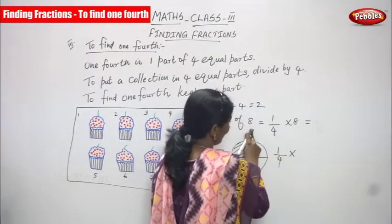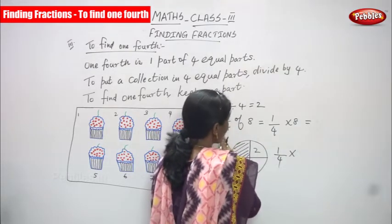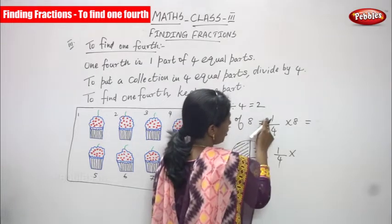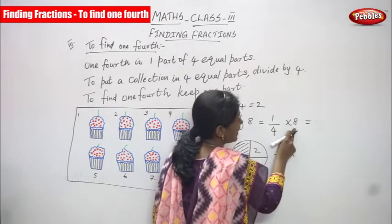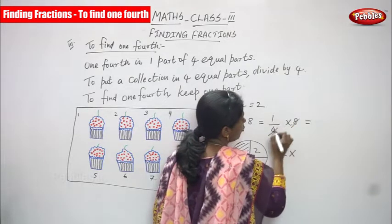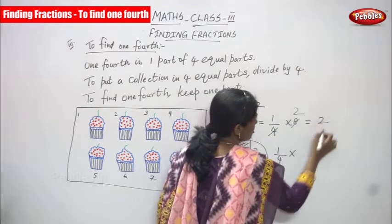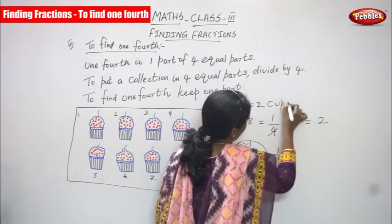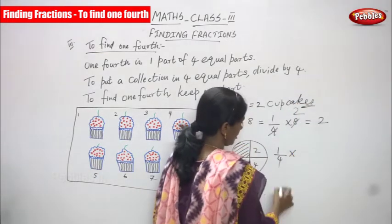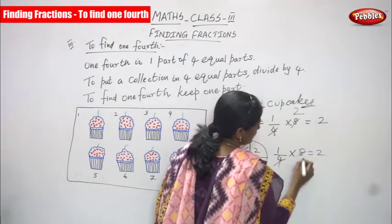One by four of eight — we have to find one fourth of eight cupcakes. So one by four, four divides into eight: using the four times table, two fours are eight, so one into two gives two. That means two cupcakes is the answer. One fourth divided into eight gives two, so two is the answer.